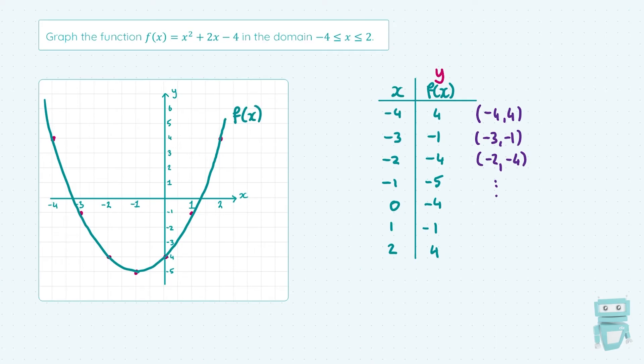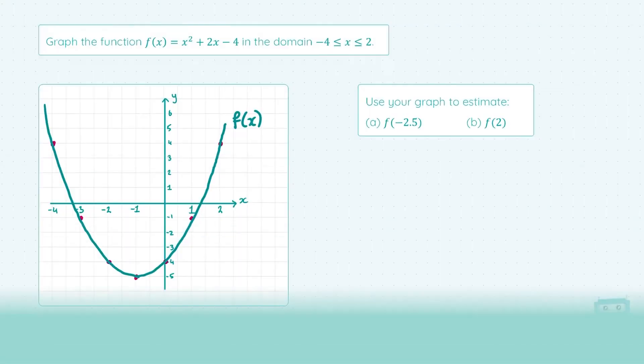That's the graph drawing — it's a little bit busy but the calculator does the hard work. You need to know the steps to input the function, identify your start and end from the domain, and set your step. Then we take that table of points, put it into our rough work, create our axes, and draw the graph. Now let's look at some of the questions that can tag along with drawing a graph.